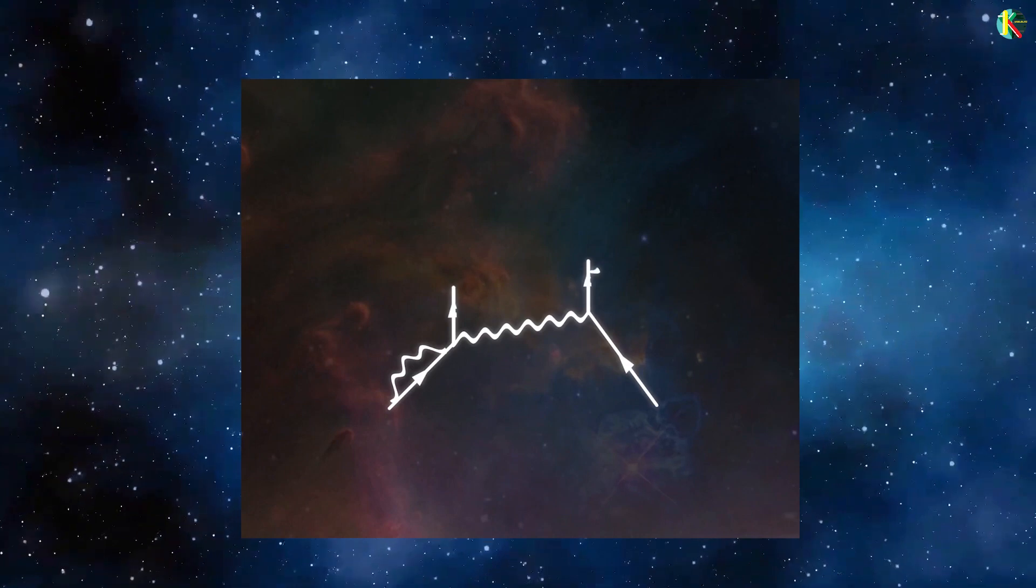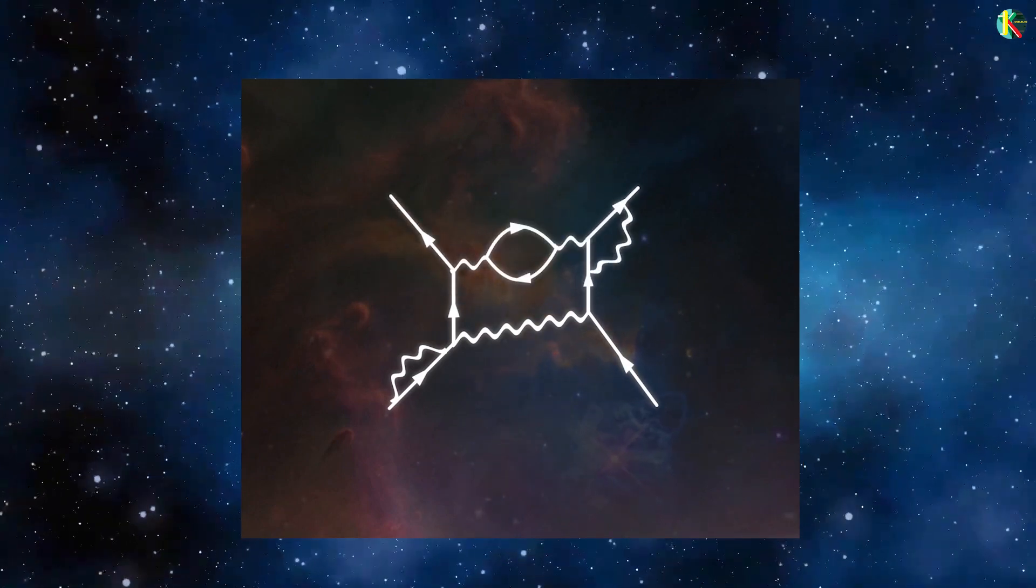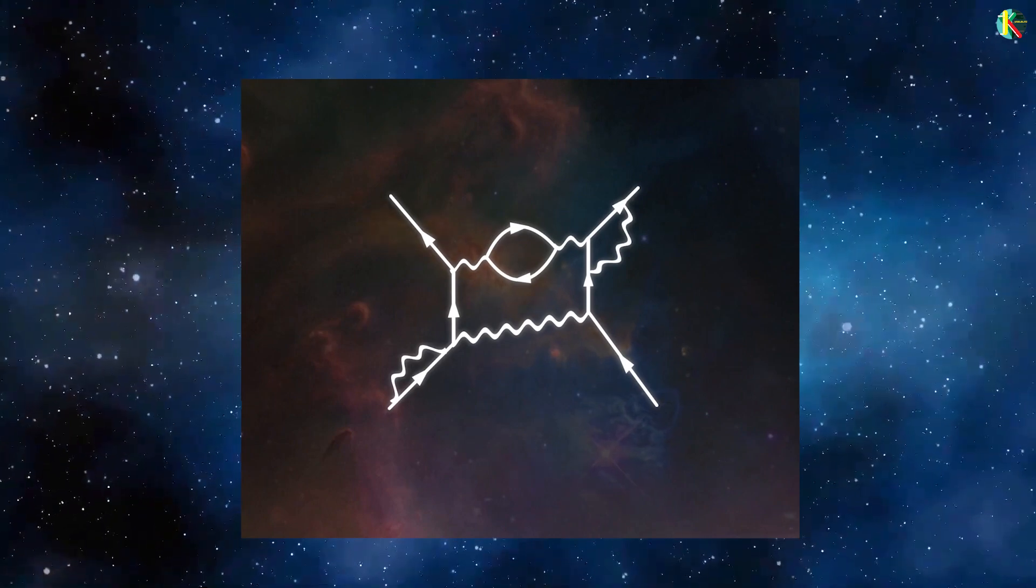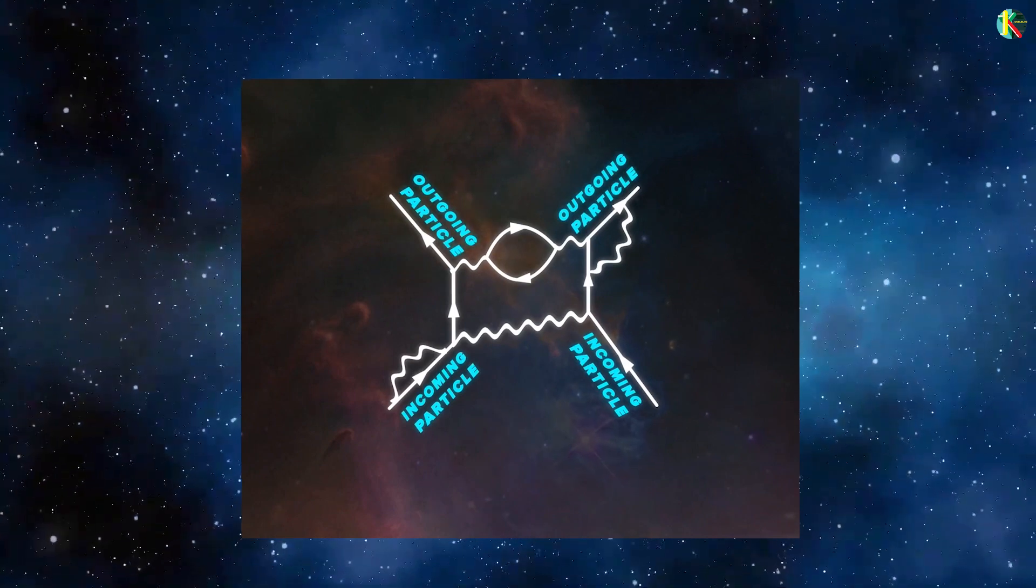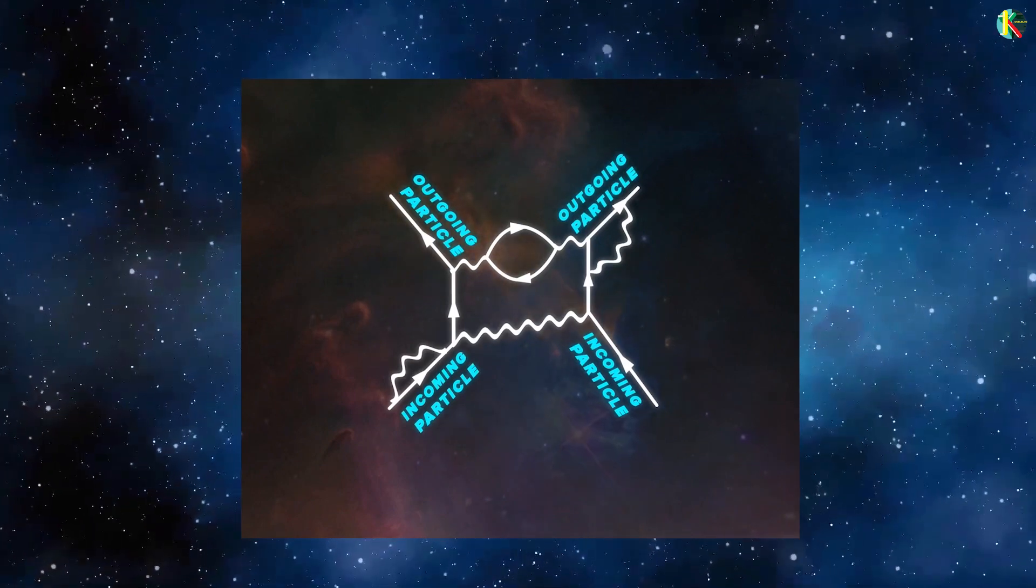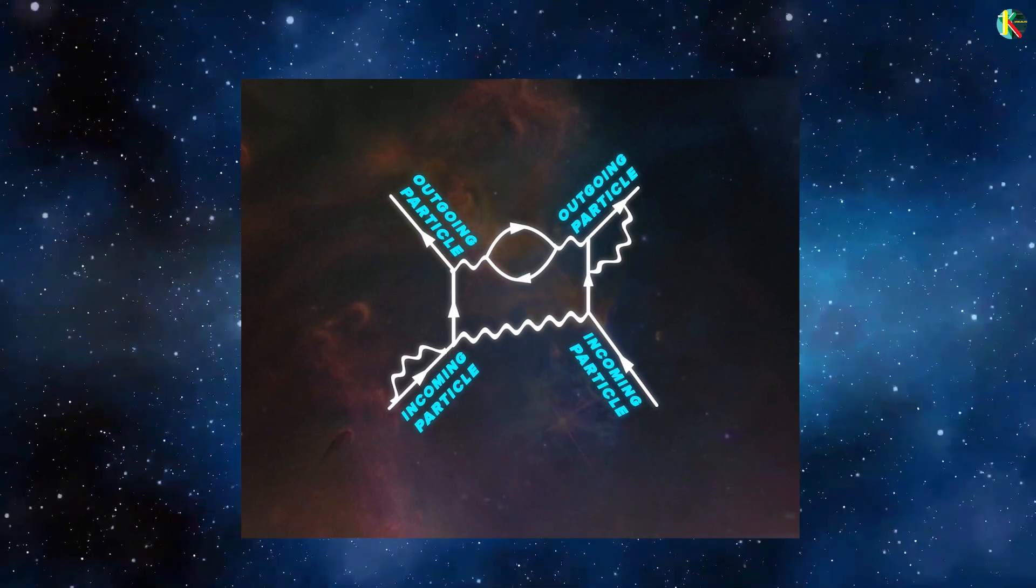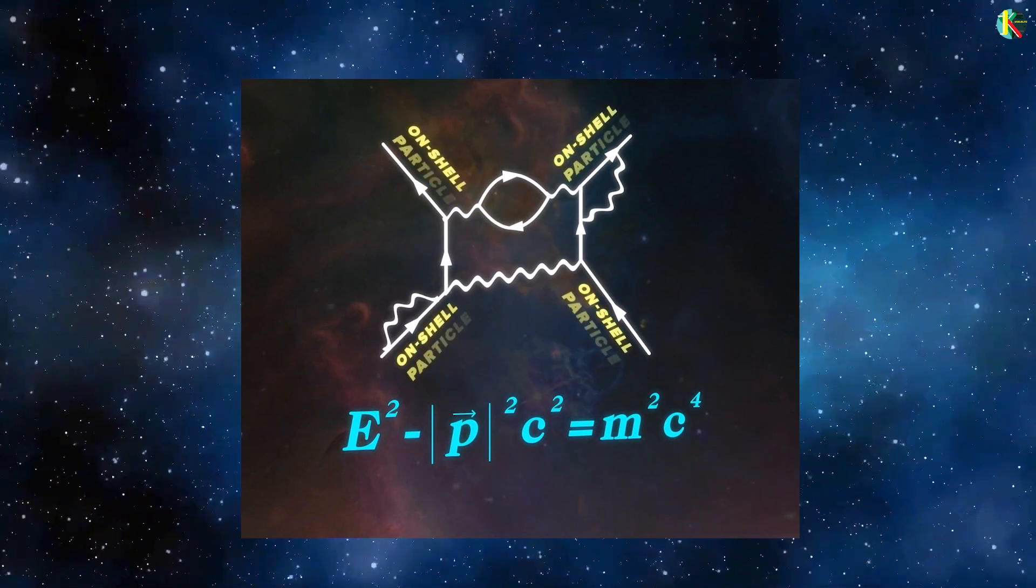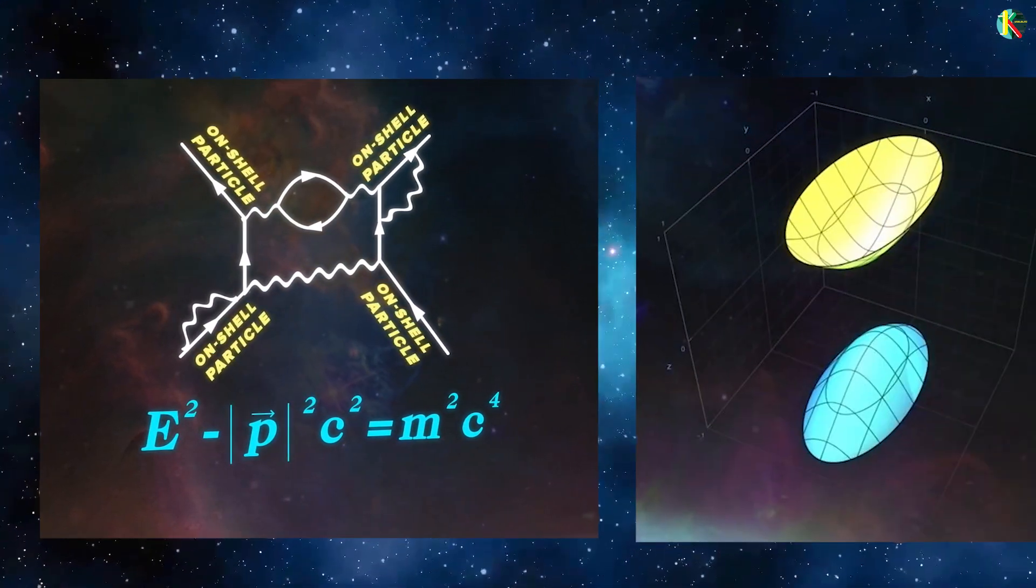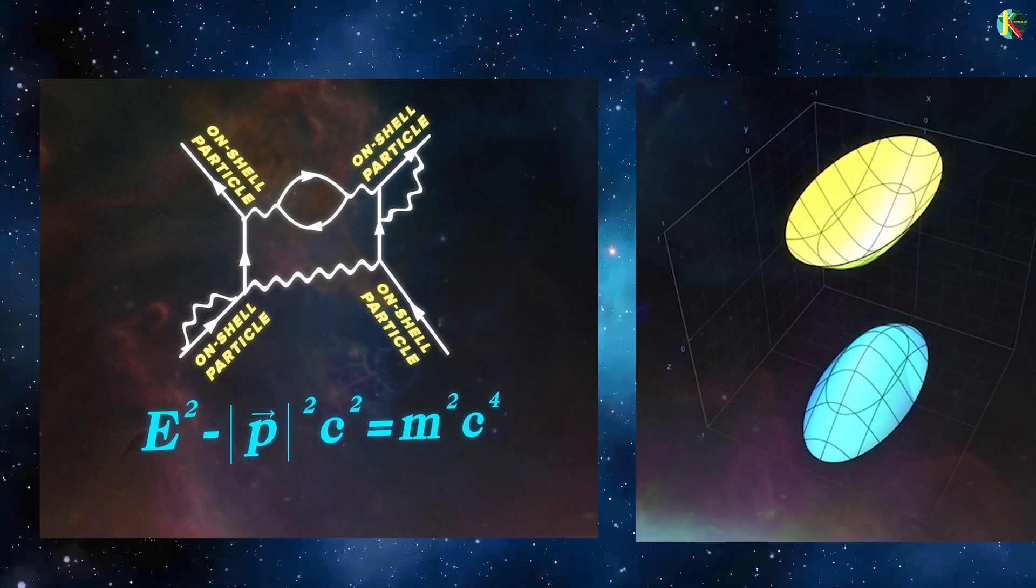Before going any further, we have to know another important rule for Feynman diagrams. The overall interaction described by set of Feynman diagrams is defined by the particles going in and the particles going out. These are the particles we actually measure. We know their properties like energy, momentum, and charge. These particles follow Einstein's mass-energy equation and are called on-shell particles. They sit on the shell structure we get when we plot Einstein's equation of energy, momentum, and mass.